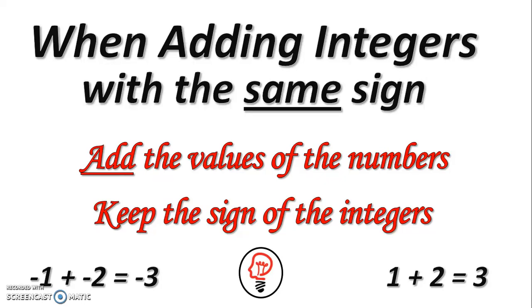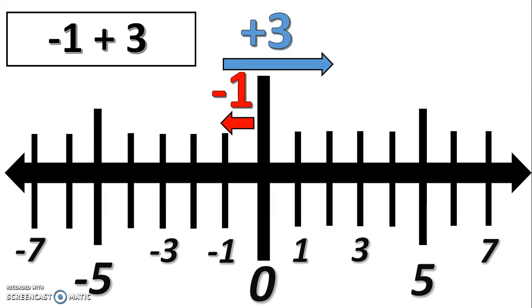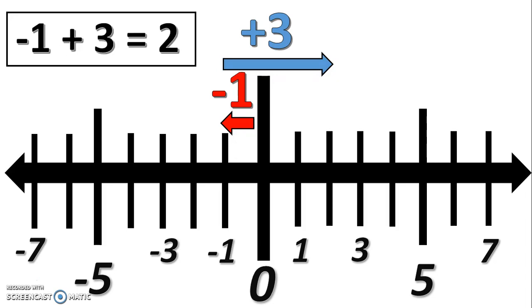Now let's look at adding integers with opposite signs. For negative one plus three, I would start at zero and move to the left one to represent my negative one. From this negative one, I would move to the right three spaces to represent adding a positive three. And this would put me at the positive two value. So negative one plus three is positive two.